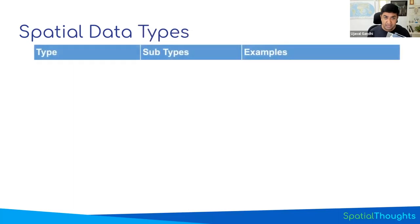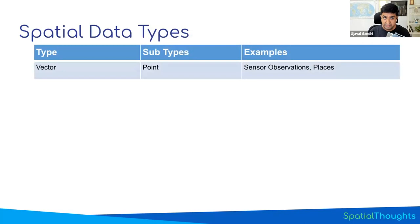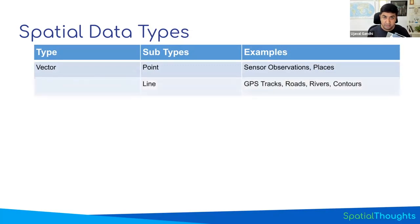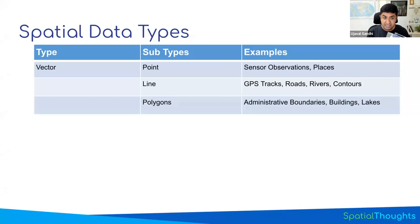There are different types of spatial data. We have a category called vector data — points, lines, and polygons. For example, if you want to model the location of a city or a sensor, you can represent that using a point with coordinates. You also have vector data in the form of lines — if you want to model a road, a track, or a river, those can be modeled as a line. Similarly, polygons can be used to model things like buildings, areas, or admin boundaries. These are the three main categories of vector data.